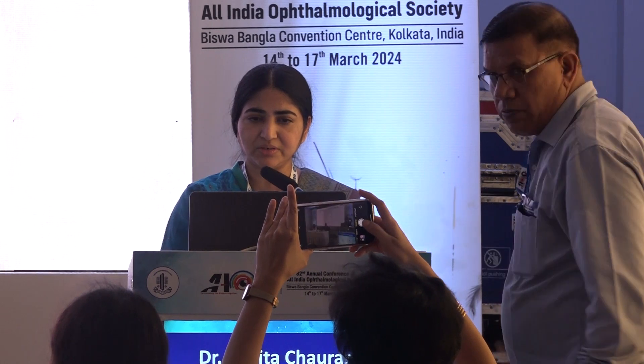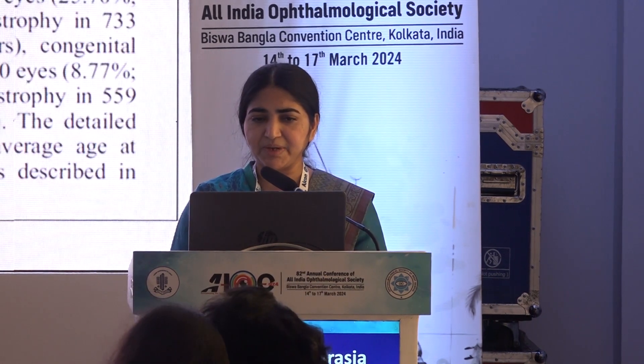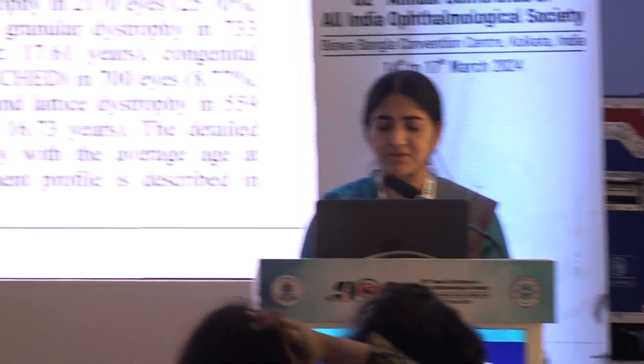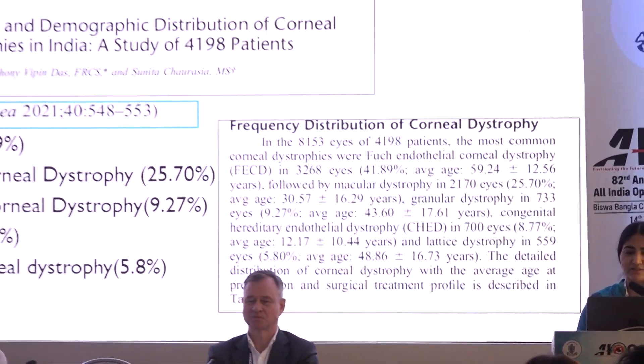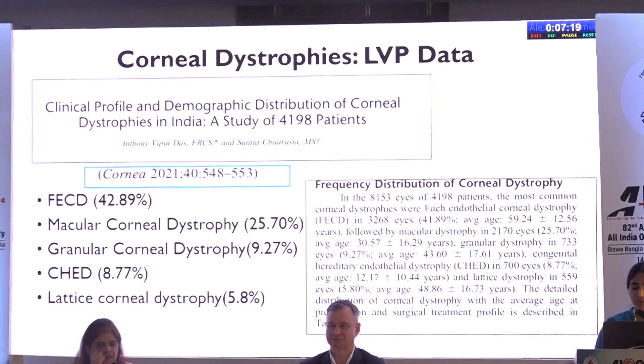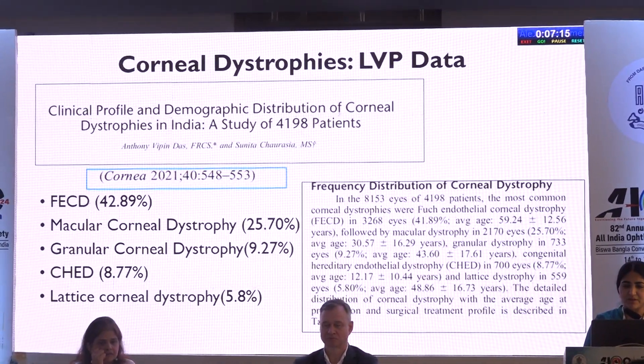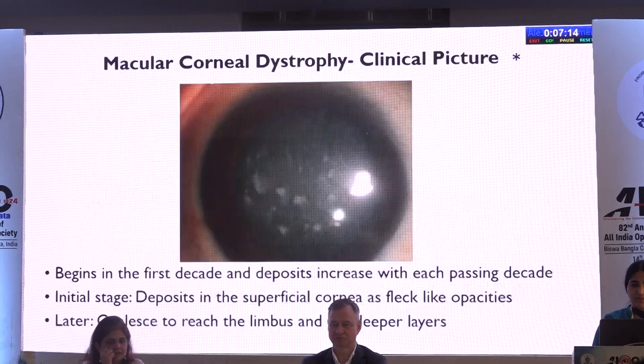When we talk about corneal dystrophies, there is a whole list of dystrophies under various categories. Strictly speaking, under the category of stromal dystrophies we have macular, Schneider's, and many other dystrophies, but primarily I'll be dwelling only upon macular corneal dystrophy for this presentation because of its commonalities. It is one of the most common stromal dystrophies seen in India, and we also come across a similar pattern in our LVP data.